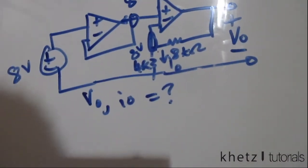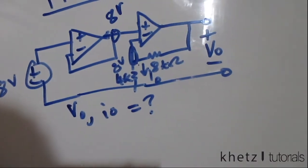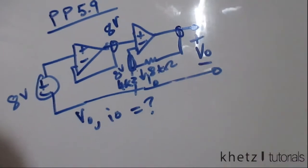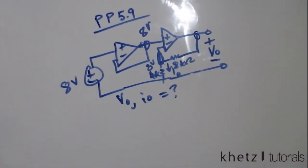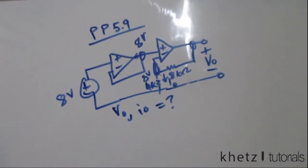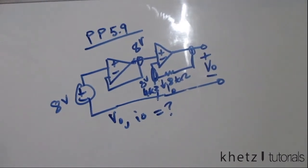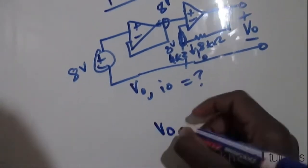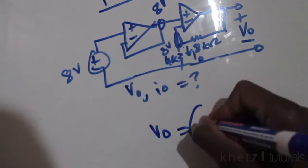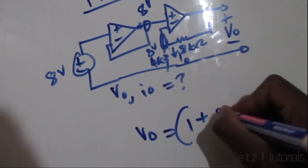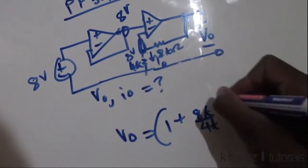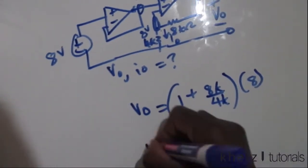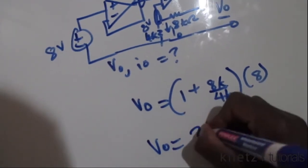So now let's do some nodal analysis to find the value of VO. VO is indicated across here, which means it is the voltage at that node. Or what we can alternatively do is use the formula for a non-inverting amplifier and say VO equals 1 plus 8k divided by 4k, multiplied by 8, which will give you VO equals 24 volts.